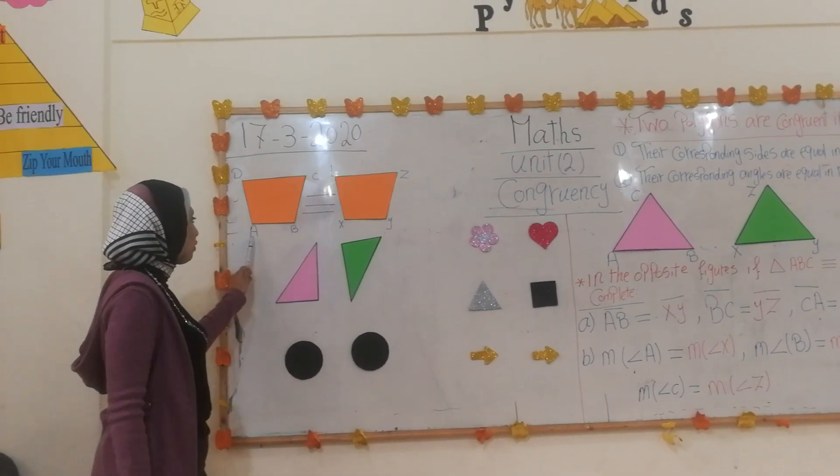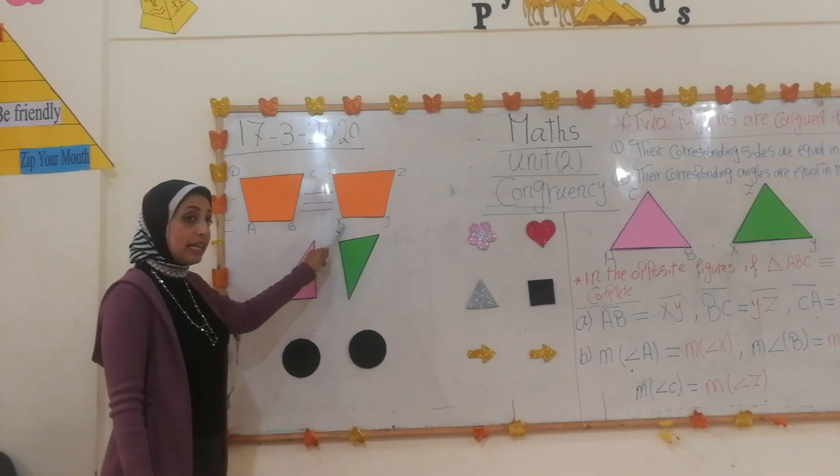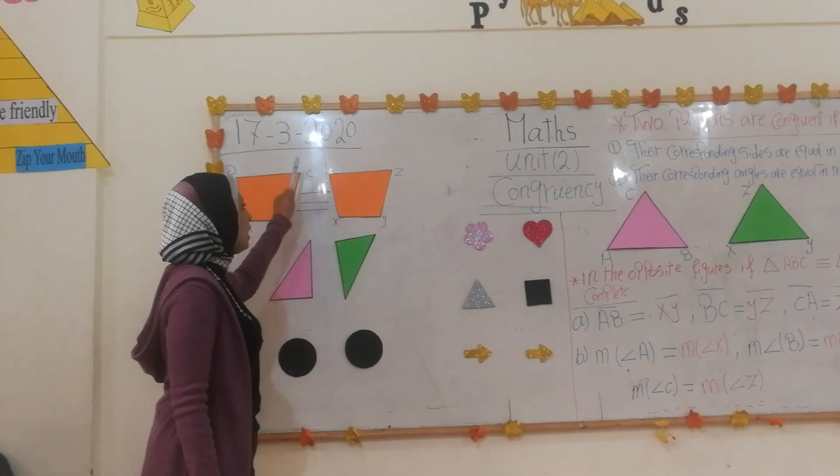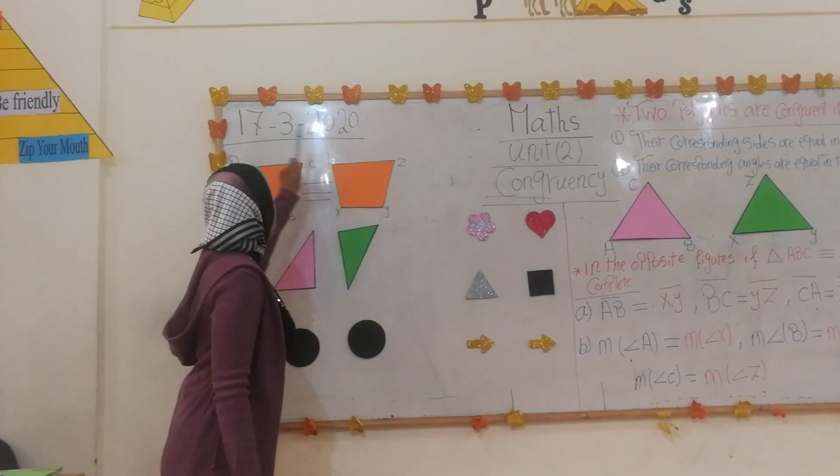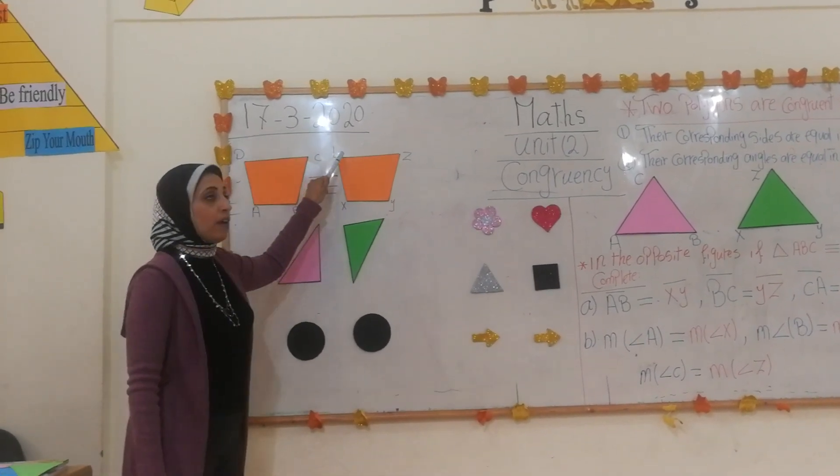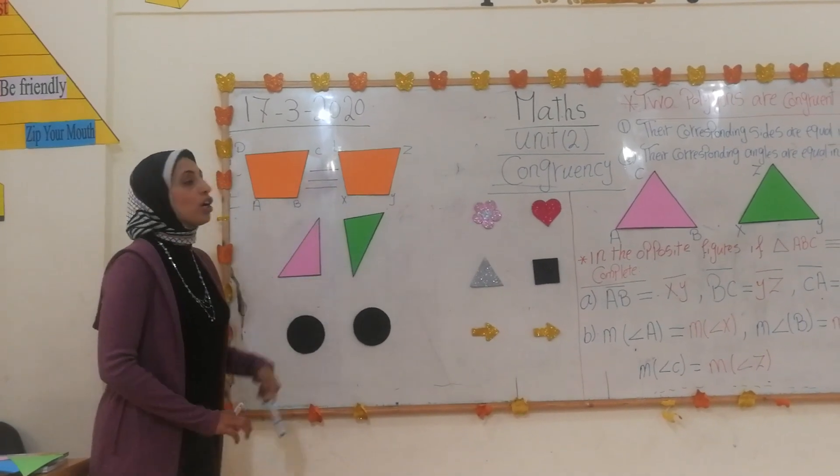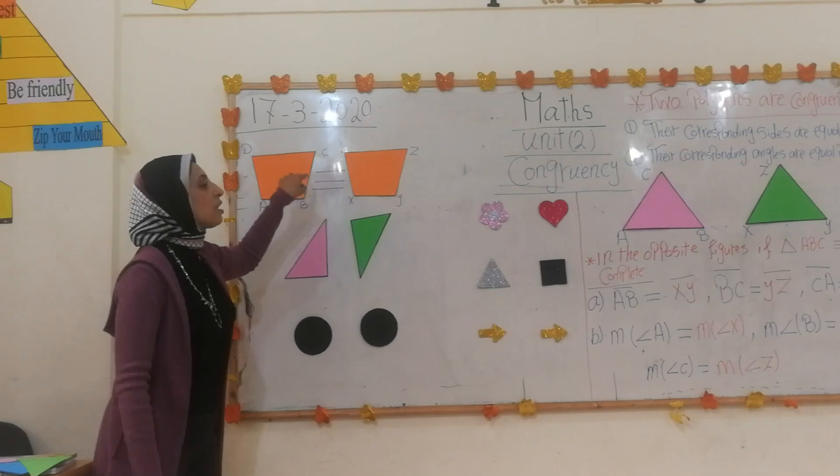And the measure of angle A equals the measure of angle X, measure of angle B equals the measure of angle Y, measure of angle C equals the measure of angle Z, measure of angle D equals the measure of angle L. So I can say that two polygons are congruent. This symbol means congruent.